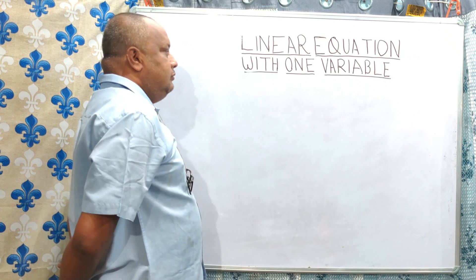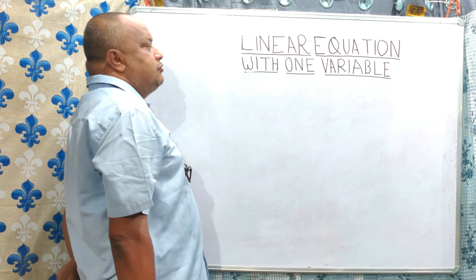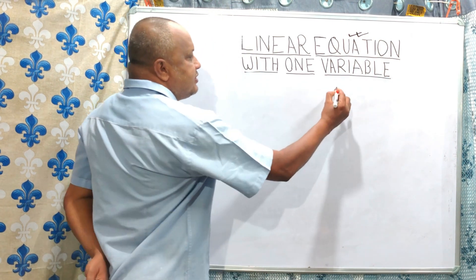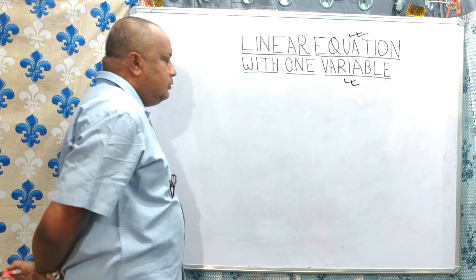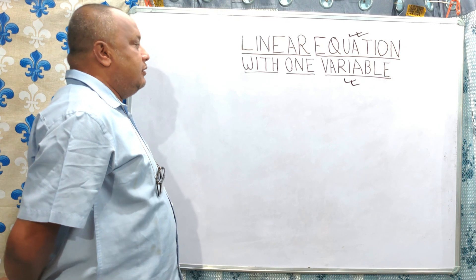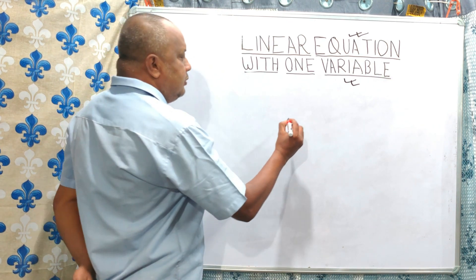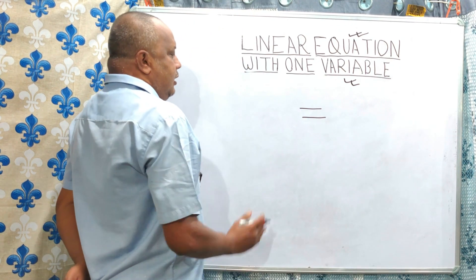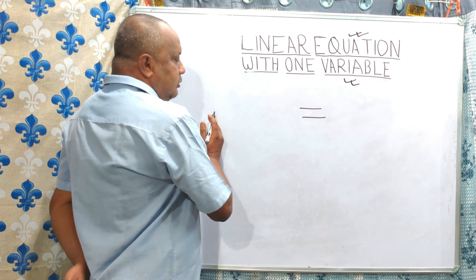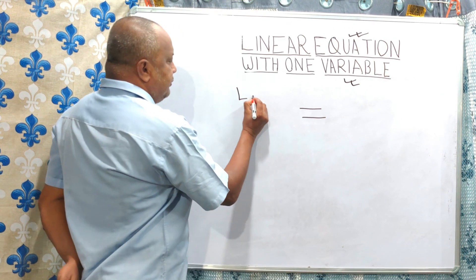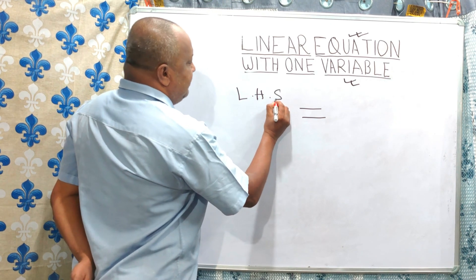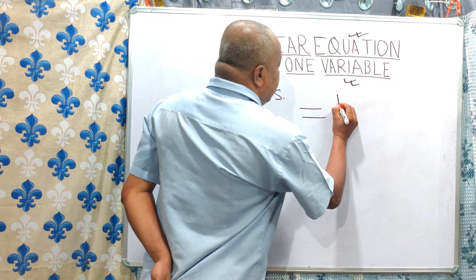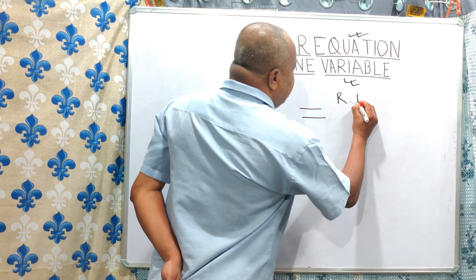Now, two terms you should know: what is an equation, and what is a variable? First of all, what is an equation? An equation consists of an equal sign. The side to the left of this equal sign is called the left-hand side, and the side to the right is called the right-hand side.